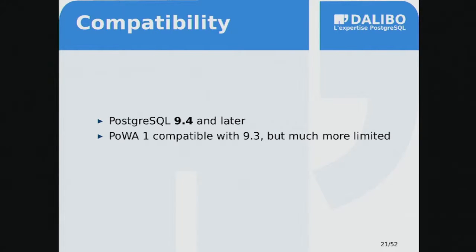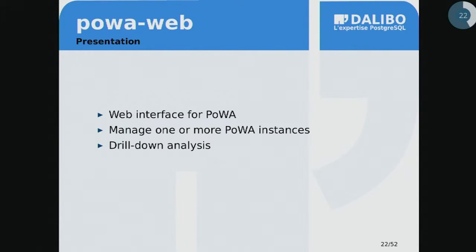All of this is compatible with PostgreSQL 9.4. The first version of POWA was compatible with 9.3 but more limited, because in 9.4 the query ID was exposed in pg_stat_statements, giving us a way to uniquely identify queries and join the other extensions' information together. On top of all of that, there's a graphical user interface that allows you to see all this data.